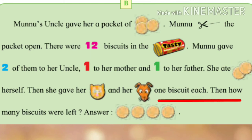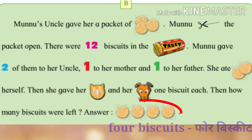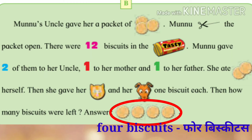Then she gave her cat and her dog one biscuit each. Then how many biscuits were left? Answer: four biscuits.